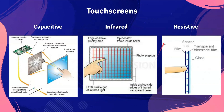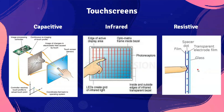Resistive touch screens use an upper layer of polyester or film and a bottom layer of glass. When a user touches the screen, the two layers come into contact, completing a circuit, and signals are sent to a microprocessor to determine the coordinates. Resistive screens are cheap and work with bare fingers, gloved fingers, or a stylus. However, screen visibility is poor in strong sunlight, multi-touch is not supported, and screen durability is only fair.